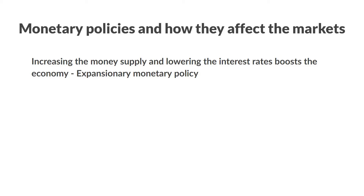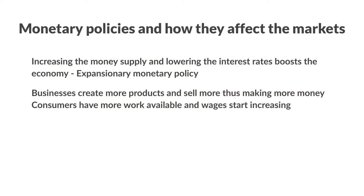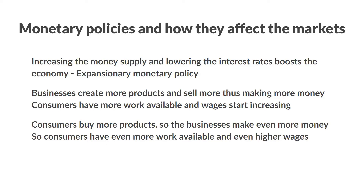Businesses use cheap loans to invest into themselves and grow faster, making more products and services, improving existing ones, and marketing them to generate more sales. This often requires more workers, so people in general have more work available, often with better wages. One man's spending is another man's income — as people make more money, they also tend to spend more. So businesses make and sell more, receive more profits, create more income in the form of wages for employees, and people spend more at businesses, which can hire even more people and offer better wages, creating an upward spiral.